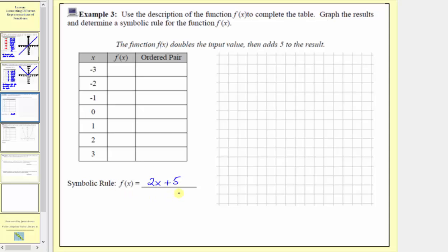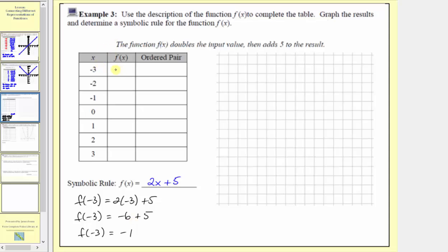Now that we have the formula for f of x, we can use it to complete the table, where we're given several input values or x values and need to find the corresponding outputs or function values. When the input is negative three, the output is f of negative three, which means we substitute negative three for x: two times negative three plus five equals negative six plus five, so f of negative three equals negative one. The ordered pair is negative three comma negative one, always written as input comma output, or x comma f of x.